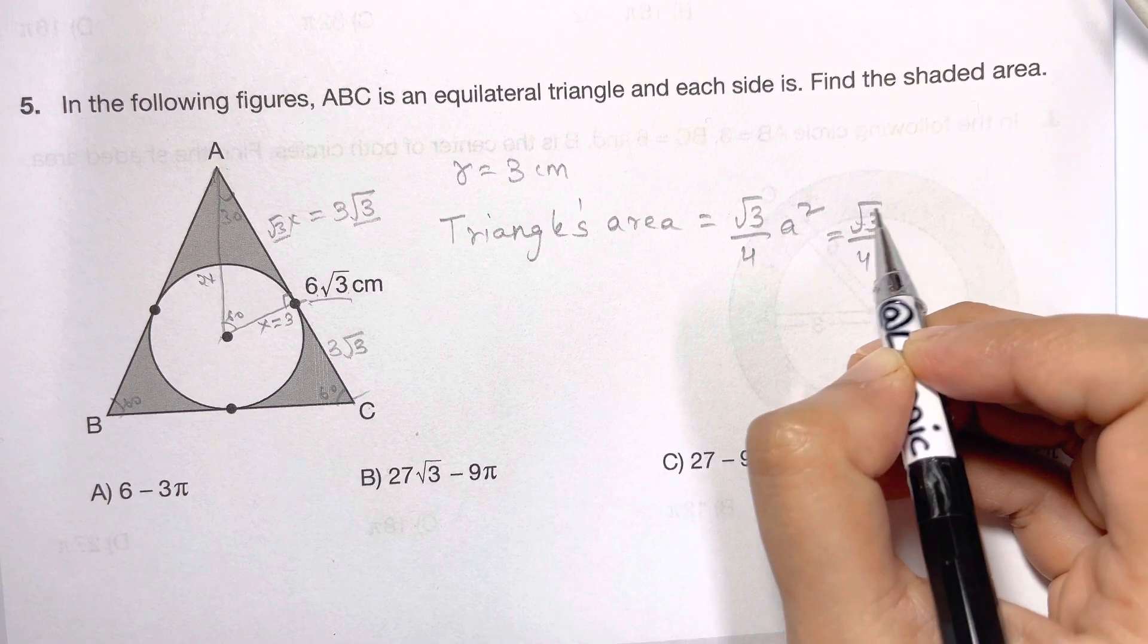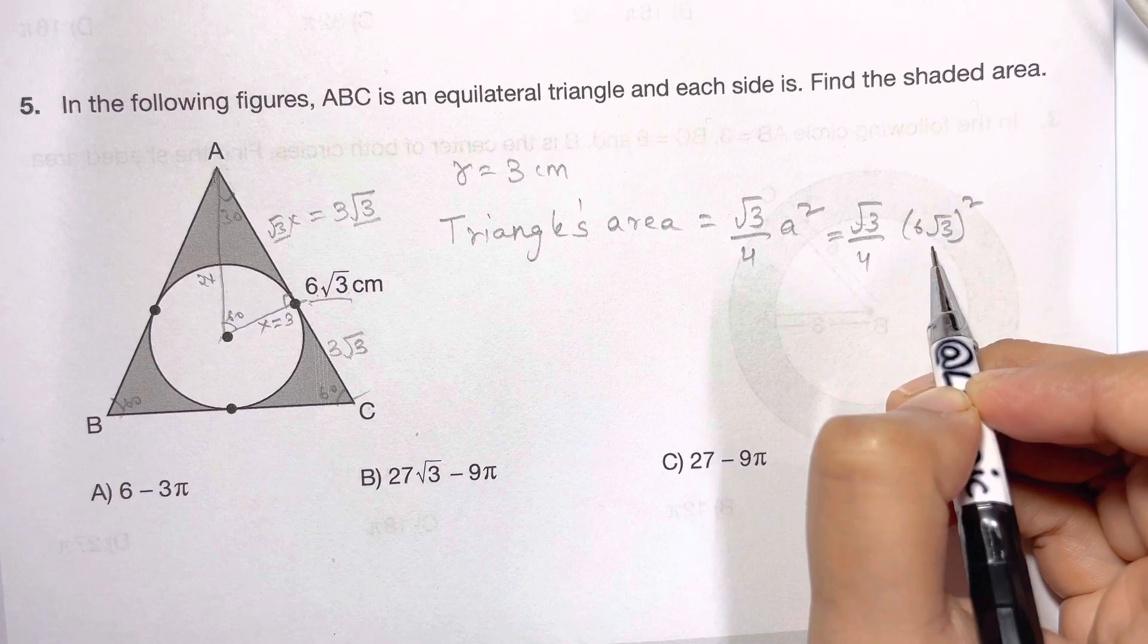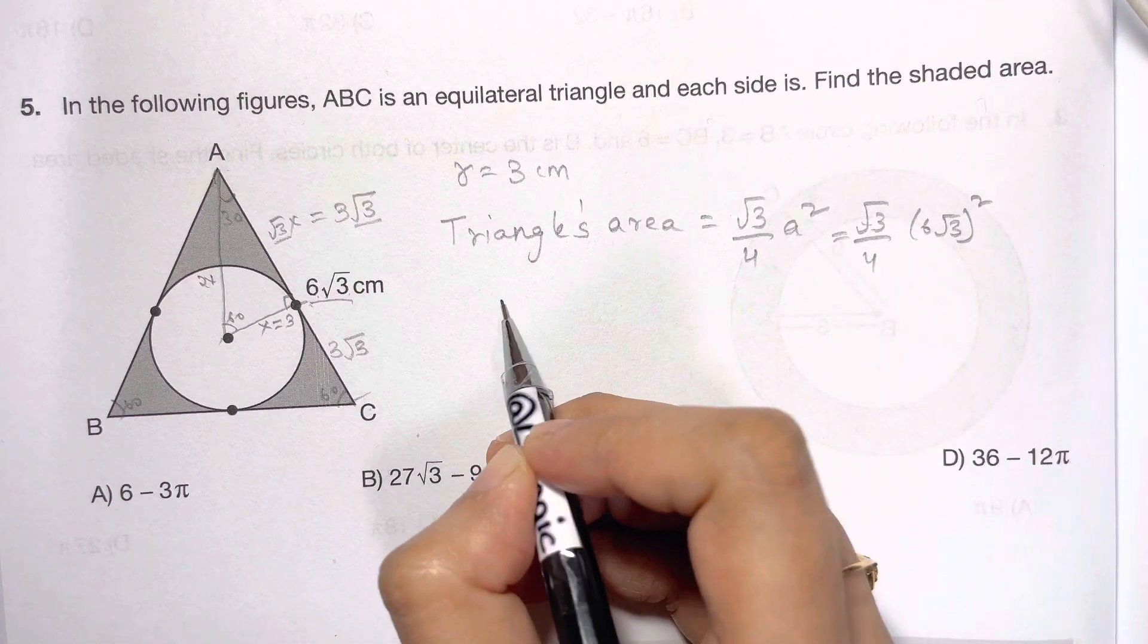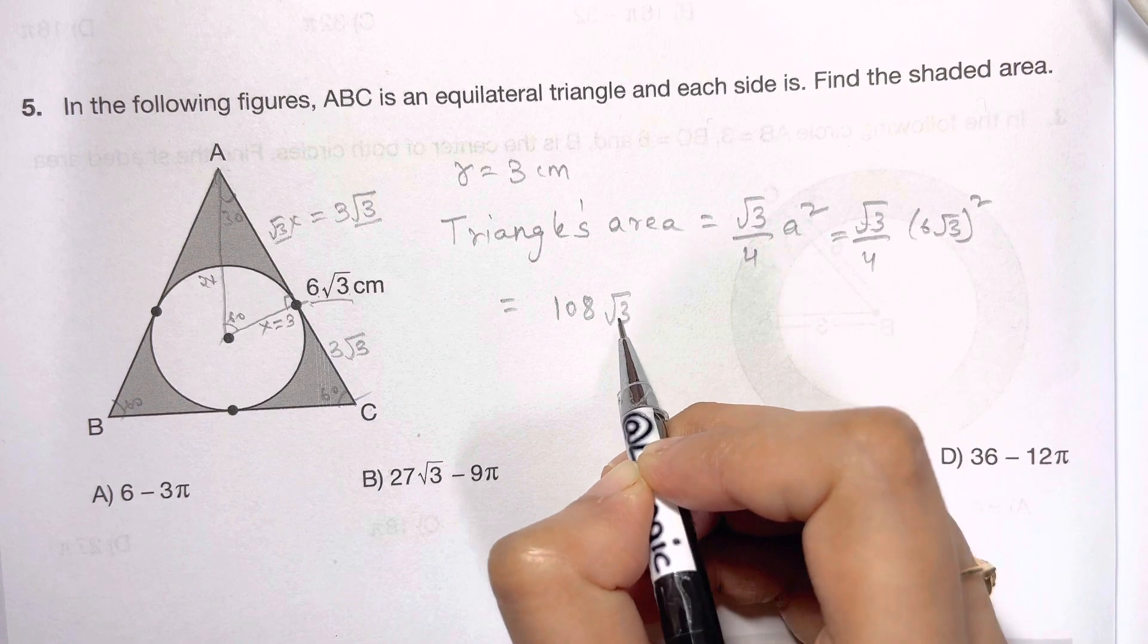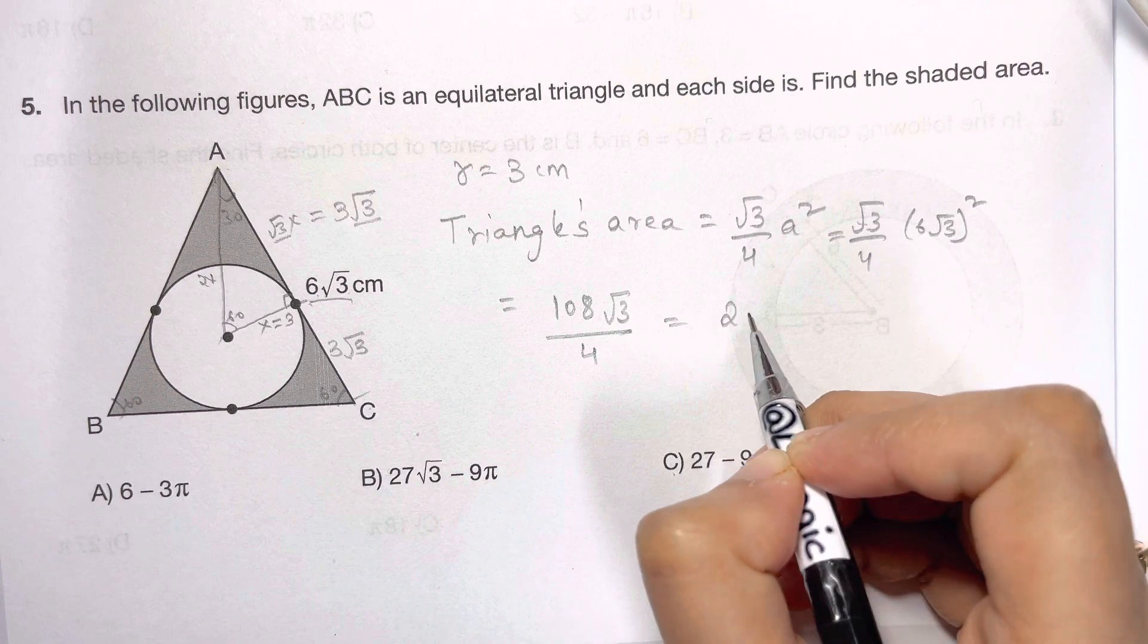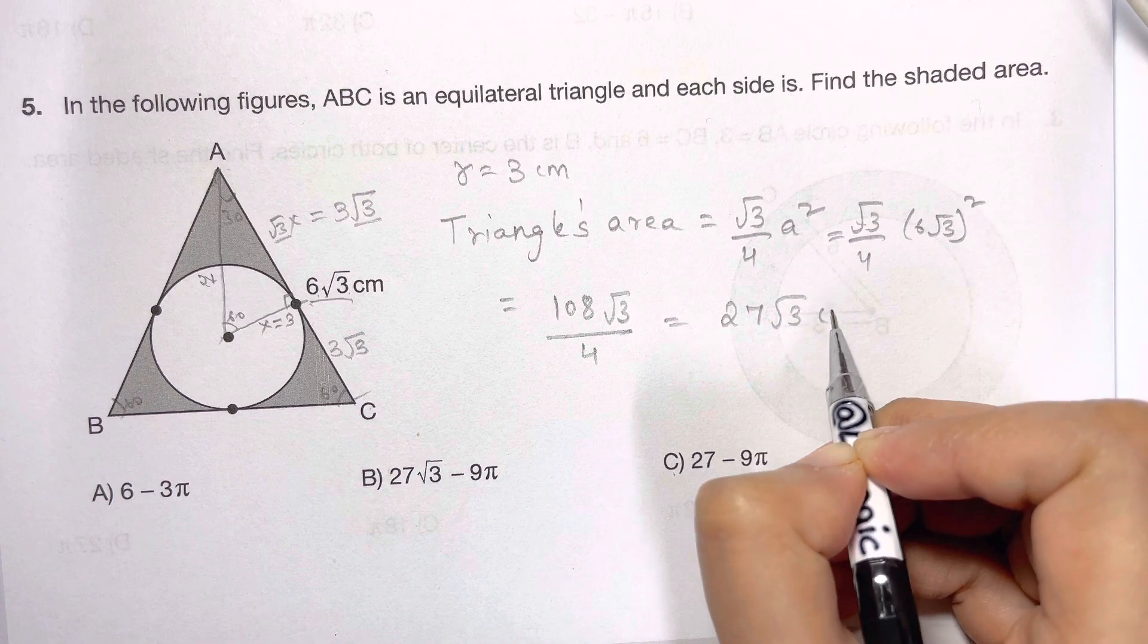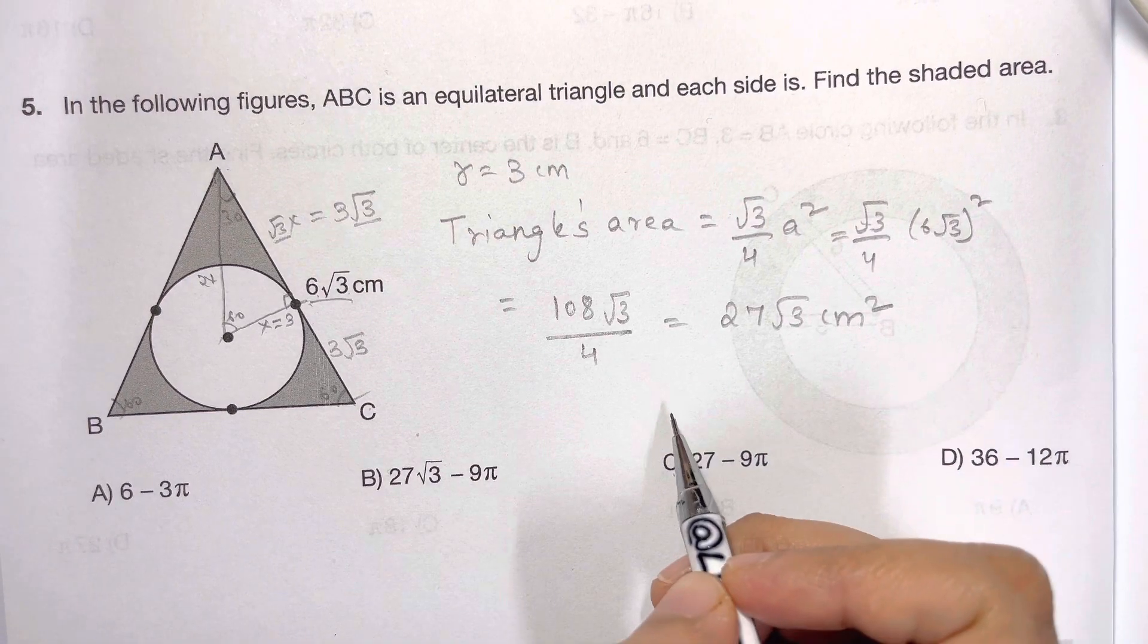What is my a? That's the side 6√3. So I'll have (√3/4) times (6√3)², and that's equal to 108√3 over 4. And when you solve this, it's 27√3 cm².